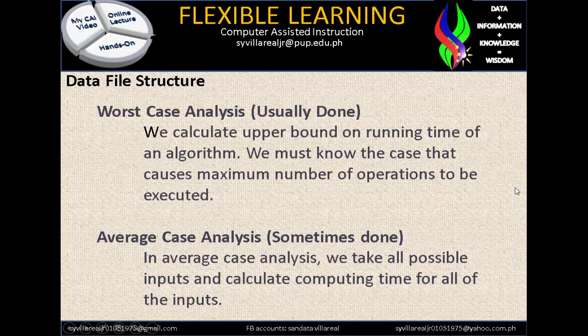Worst case analysis is usually done. We calculate the upper bound on running time of an algorithm — we must know the case that causes the maximum number of operations to be executed. In other words, you have plenty of time but still did not solve the problem. That is what we call worst case analysis.